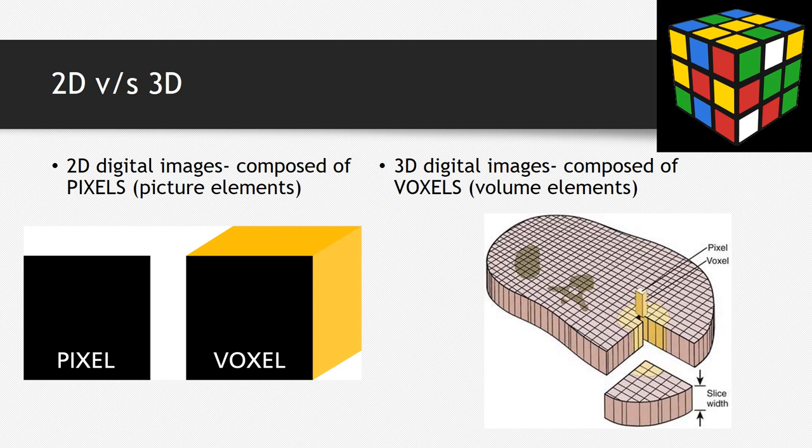Two dimensions versus three dimensions: two-dimensional digital images are composed of picture elements or pixels. In three dimensions, you have the third dimension which is depth — the x-axis, y-axis, and z-axis — and that element is called a voxel. A volume element is called a voxel. For example, with this Rubik's cube, one of the squares you see — the yellow one — is a pixel, whereas the entire volume of the cube itself is a voxel.